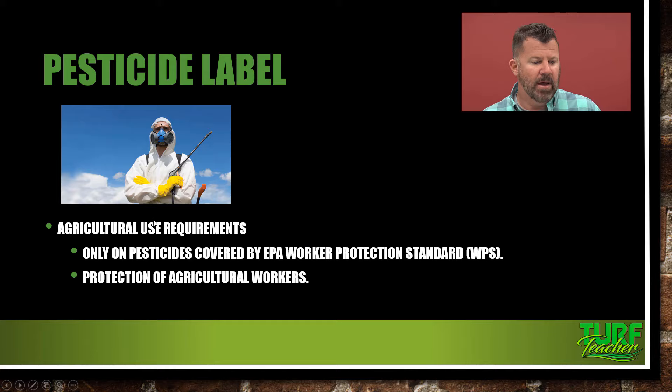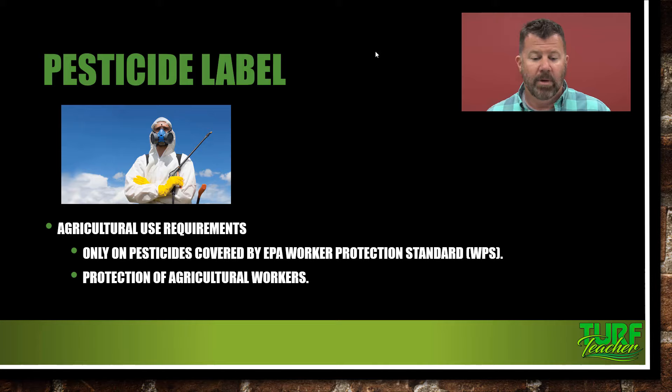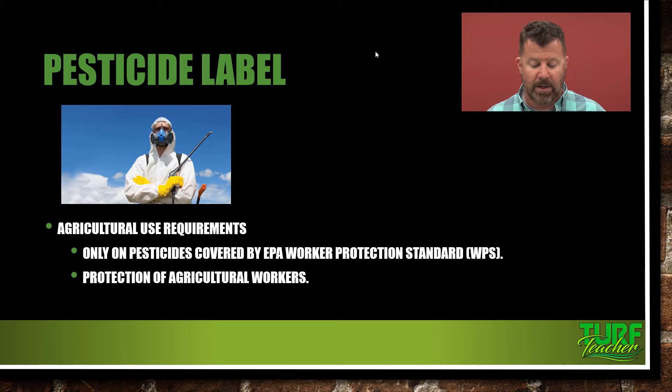Agricultural use requirements apply only to pesticides covered by the EPA Worker Protection Standard, or WPS. This is the protection of agricultural workers — years ago several got actually sick from that. They have to be protected, especially immigrant workers who may not speak English. We've got to make sure we're taking care of our workers — this is something dangerous, and you're talking about a major workers' comp claim that could be very damaging to the pocketbook.